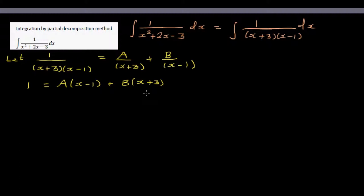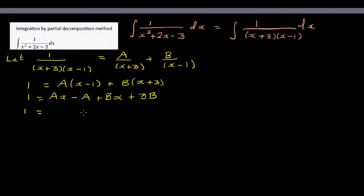There are two ways to find A and B. The first way is algebra. Expanding the right hand side gives A·x minus A plus B·x plus 3B, which simplifies to (A+B)x plus (3B minus A).